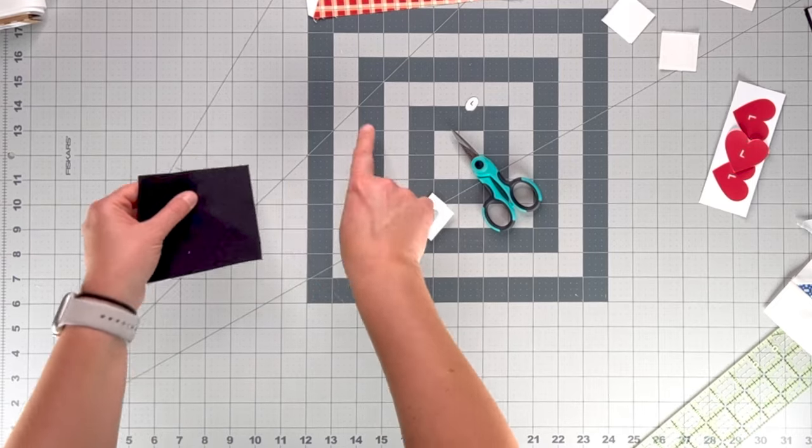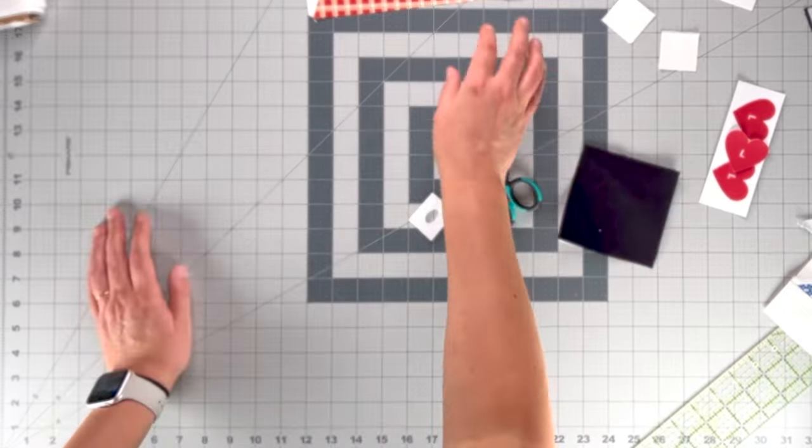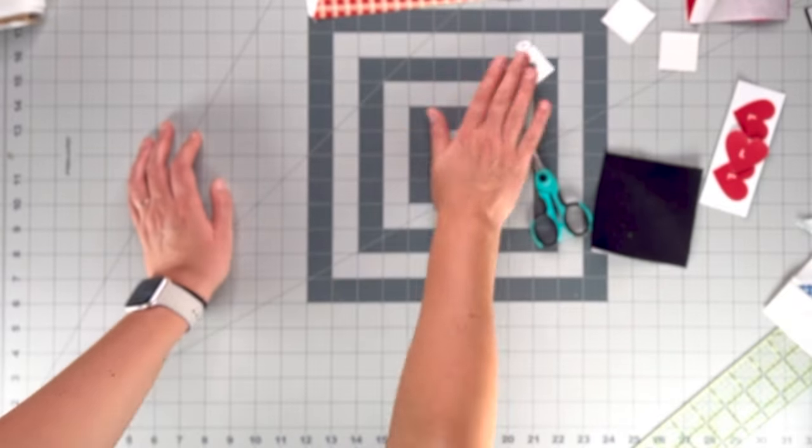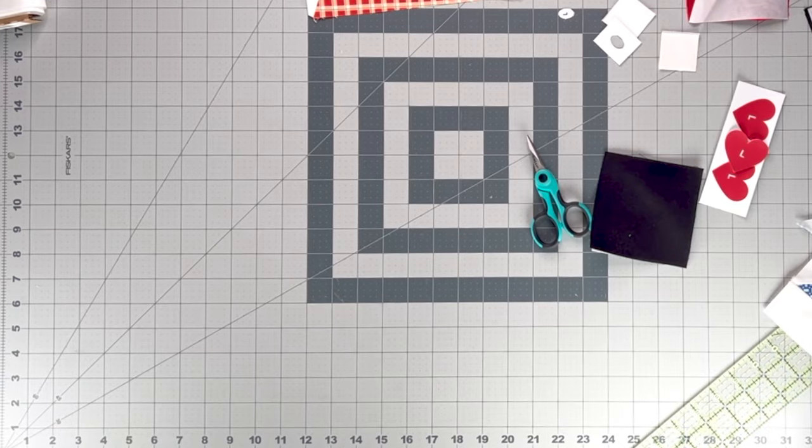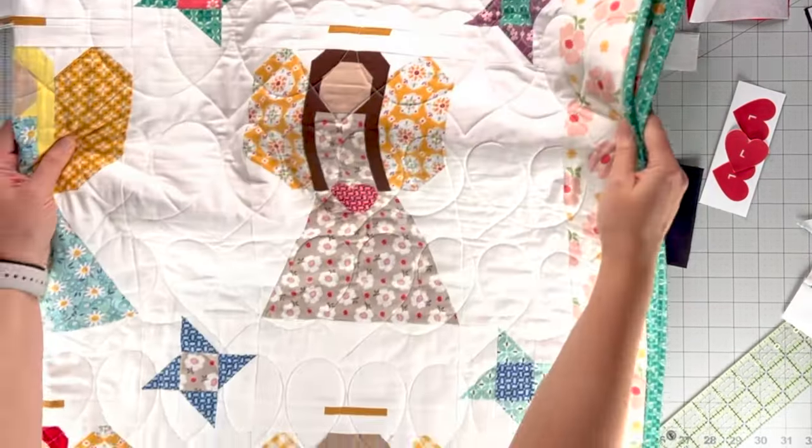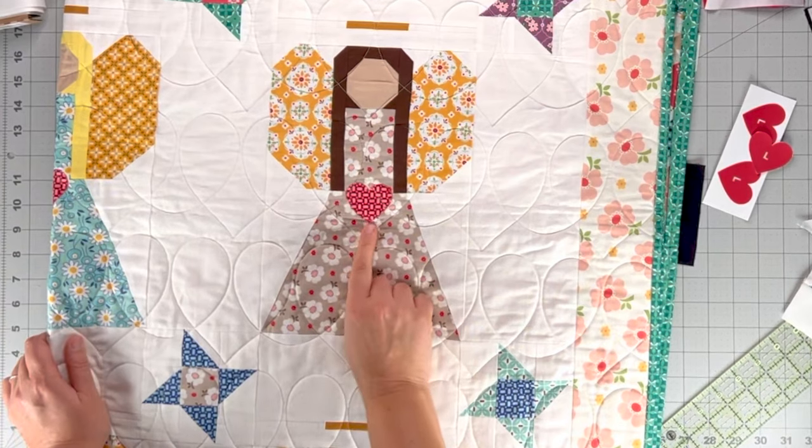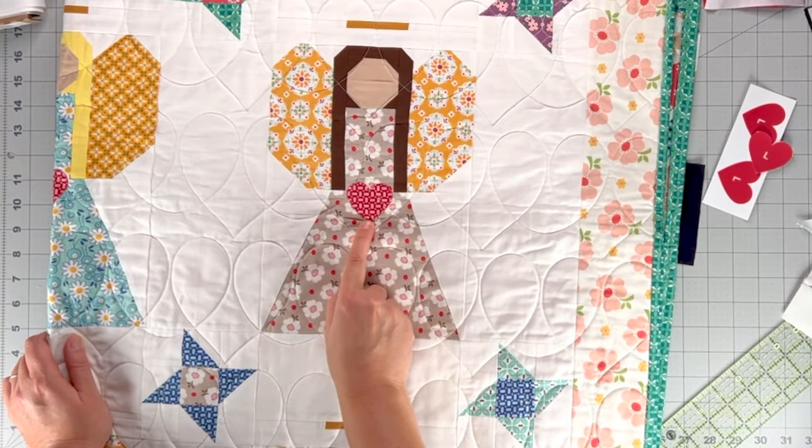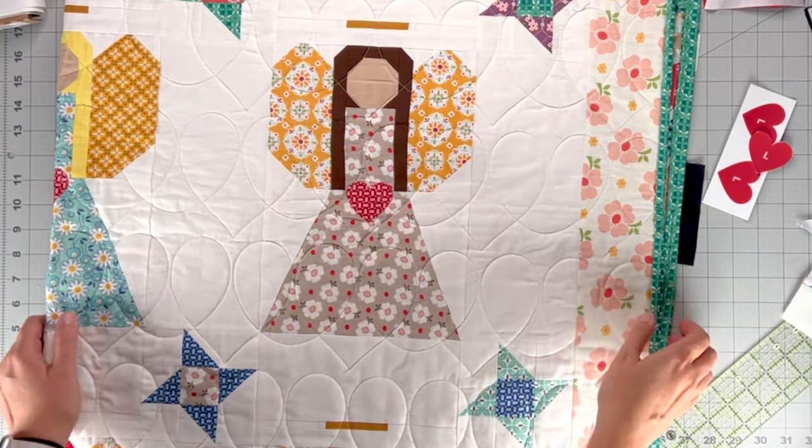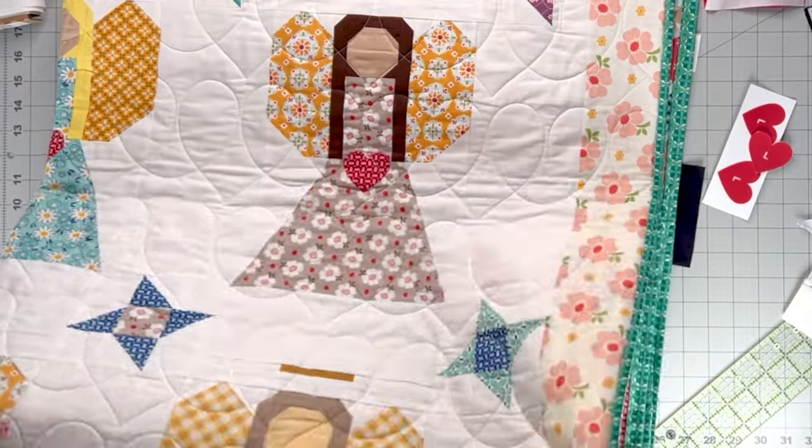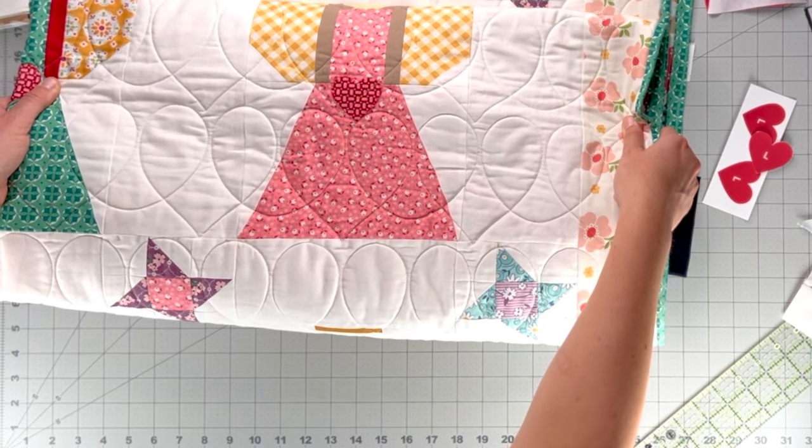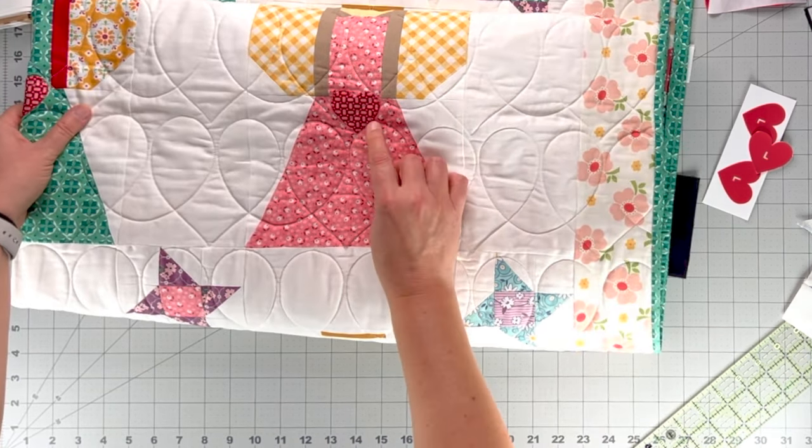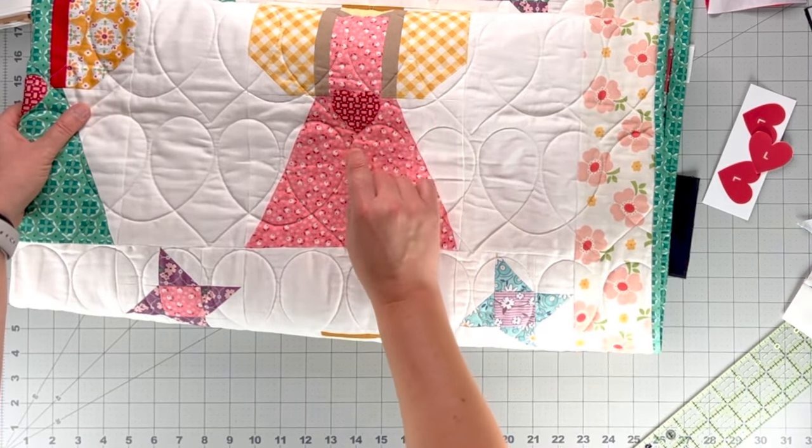And then that little circle will just go right on there and press on there. And it makes it so easy to do your applique. And again, on this quilt, I did a blanket stitch around the outside of each one of the little hearts. I don't know if you can see that very well, the little blanket stitch, but that holds that fabric edges down.